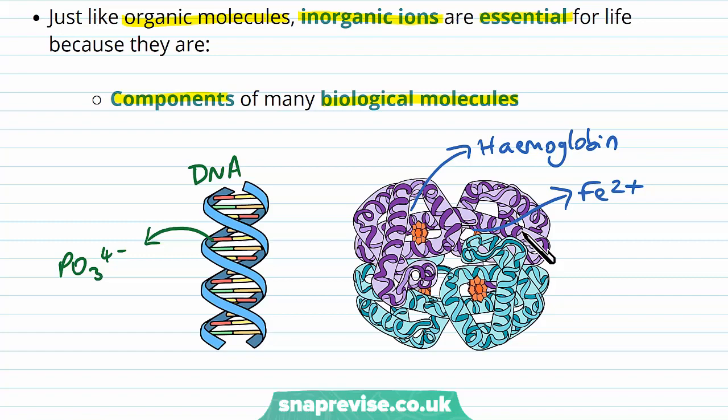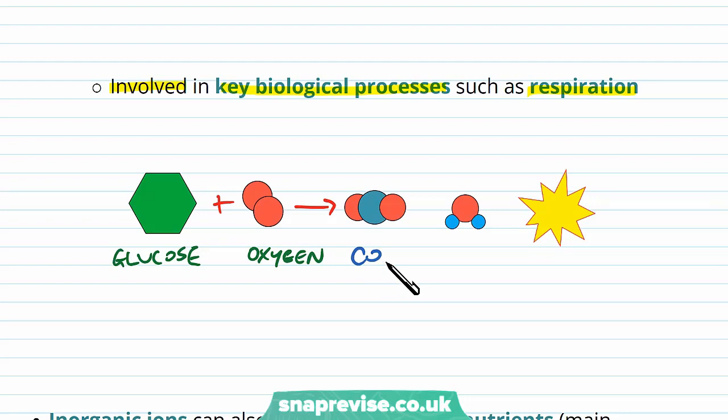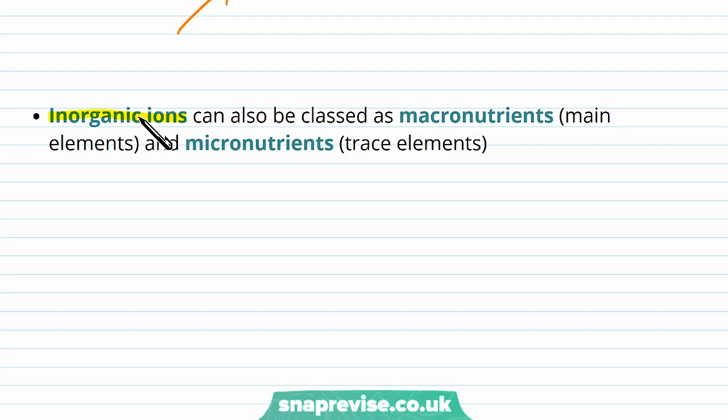They're also involved in other key biological processes, like respiration, which is carried out by all cells of any organism. Respiration is where we take molecules like glucose and combine them with molecules of oxygen, producing carbon dioxide and water, with the important product being ATP. Inorganic ions are used at various stages of this reaction, for example in the enzymes. We can also class inorganic ions as not only being cations or anions, but as macronutrients, which are the main elements, and micronutrients, or trace elements.